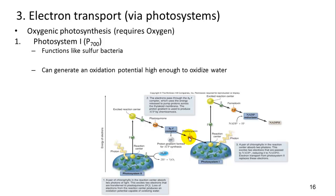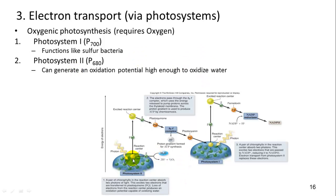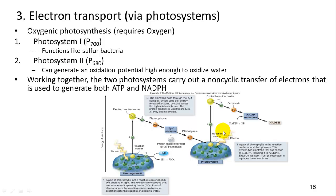This is oxygenic photosynthesis requiring oxygen. Photosystem I contains the P700 reaction center and functions like the sulfur bacteria system. Photosystem II generates an oxidation potential high enough to oxidize water. Working together, Photosystems I and II produce ATP and NADPH, which store potential energy for the light-independent reactions.